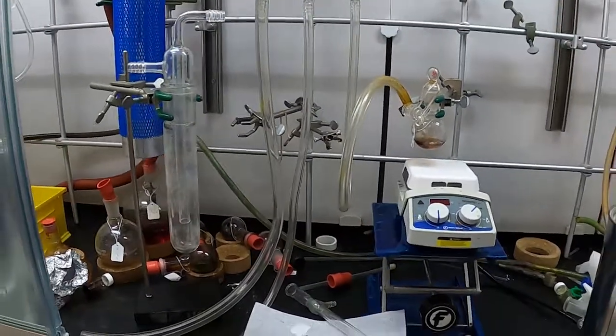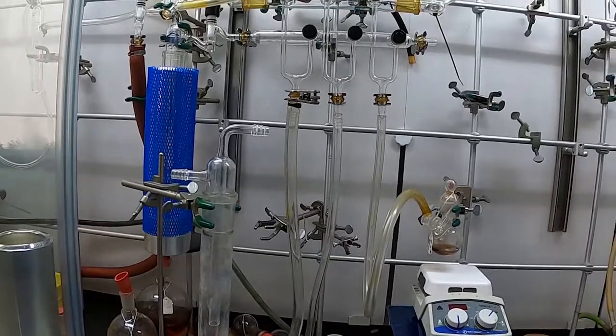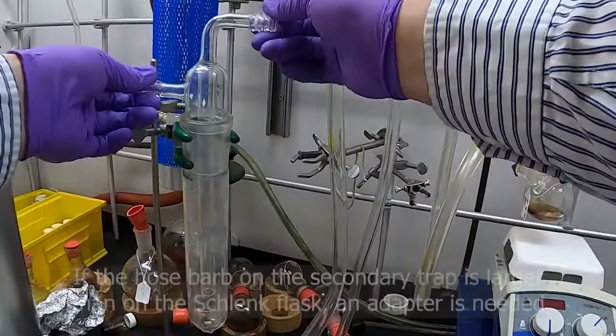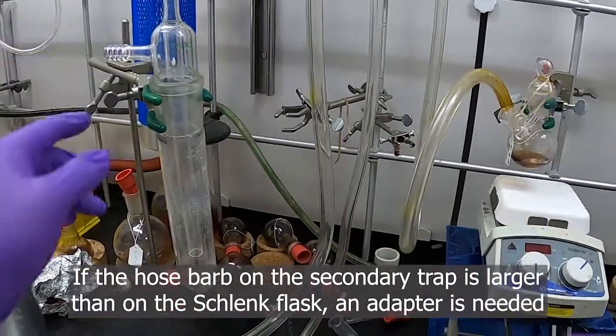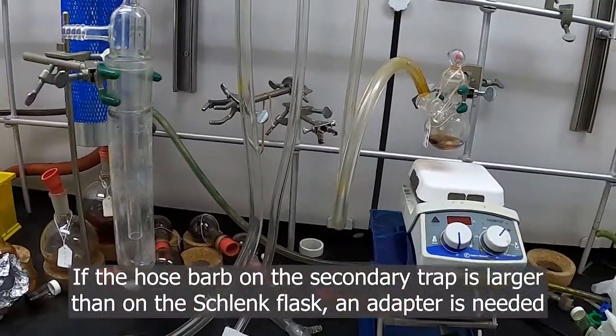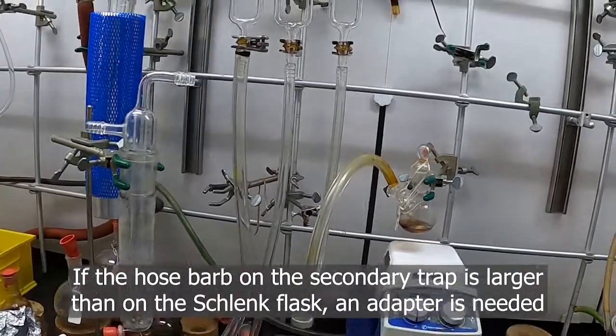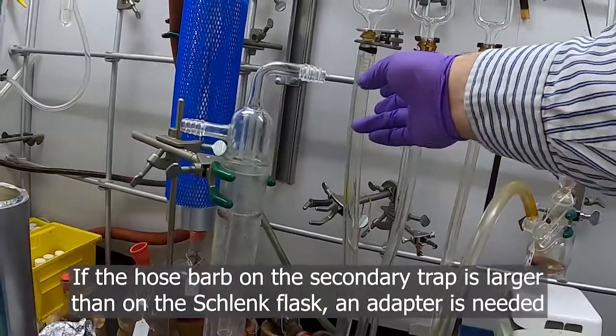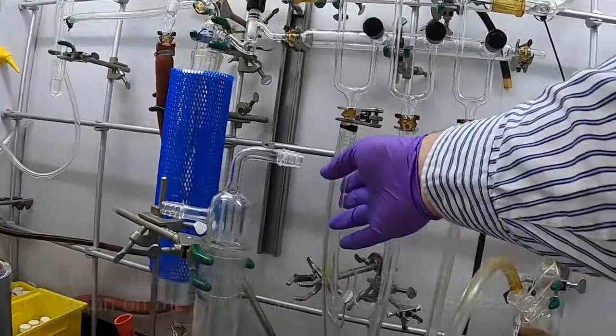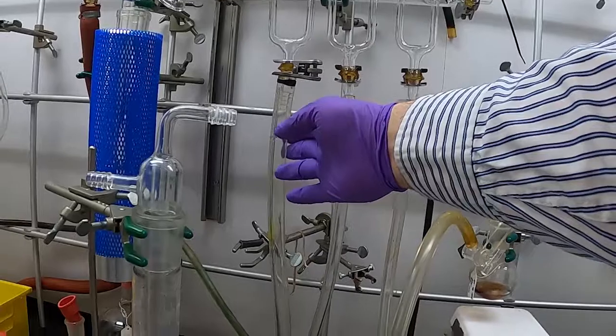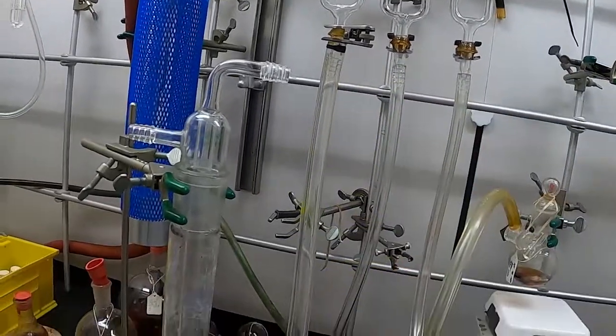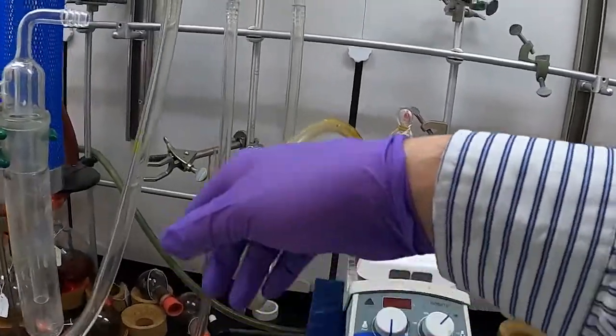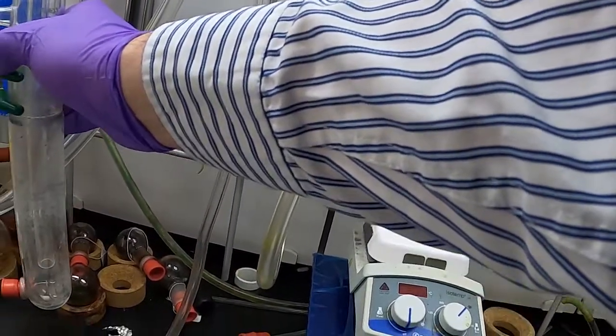This particular external trap has larger hose barbs on it than the actual flask, so we need to do a little bit of adapting. Our Schlenk line has these nice little ball valves where we can adjust for different tube sizes. I've already connected the larger side's tubing here on the far left tap because we're going to have the larger volume here. We'll connect the vacuum to the side over here to the vacuum trap.